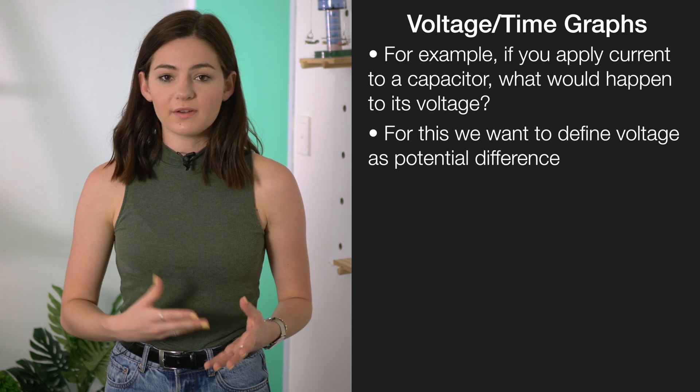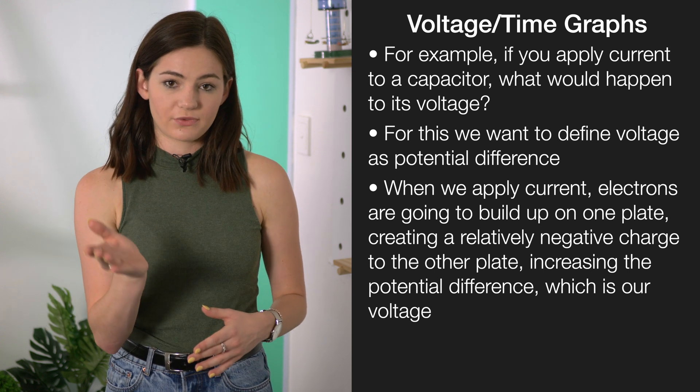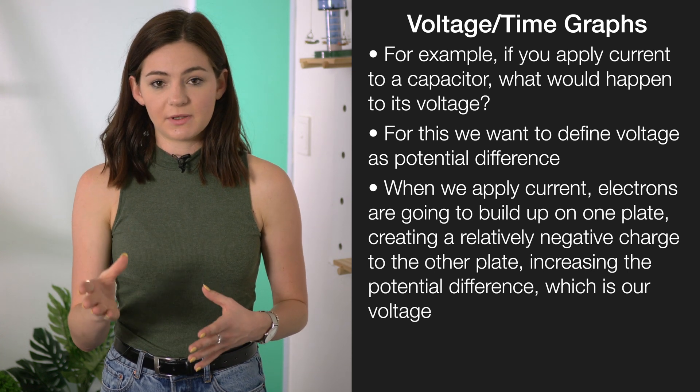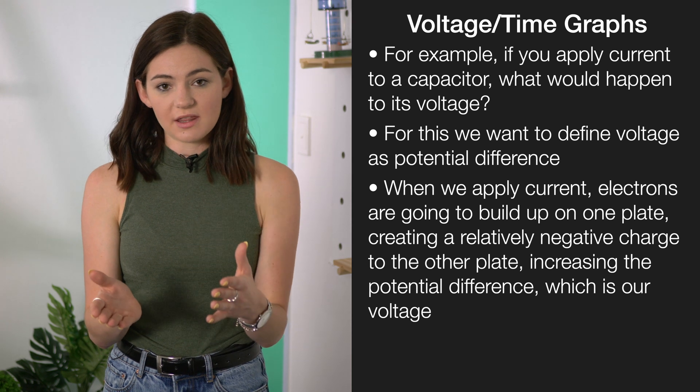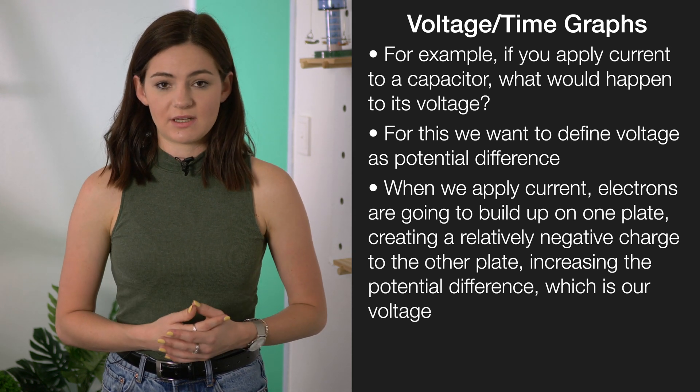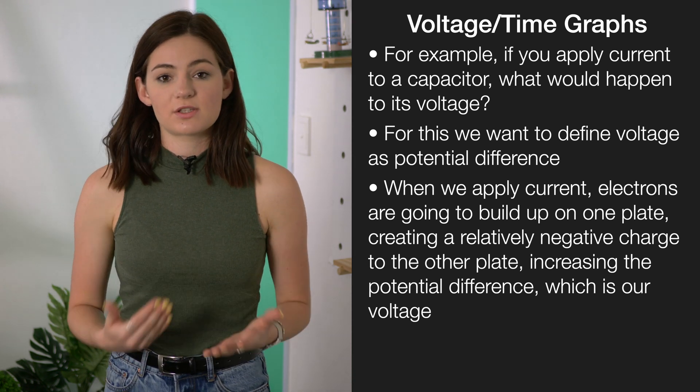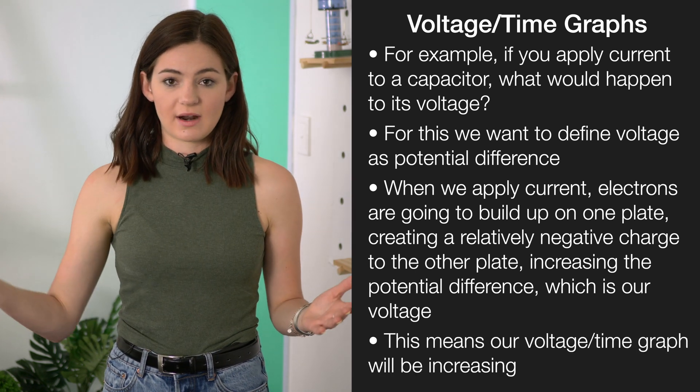So if we turn on a current, all of the electrons are going to flow towards one of the plates of the capacitor and build up a relatively negative charge to the other plate, therefore increasing the potential difference, which is your voltage. So your voltage over time graph is going to be an increasing graph.